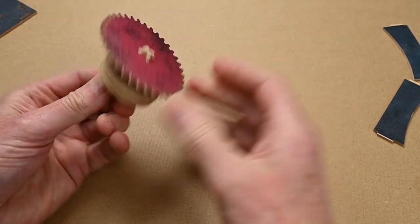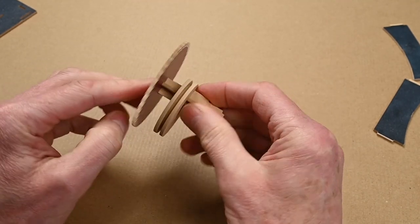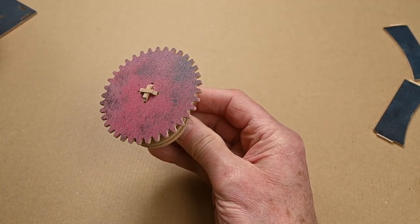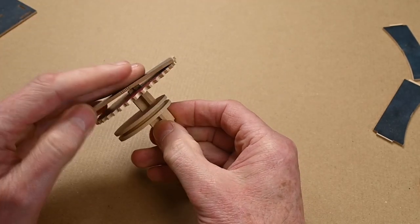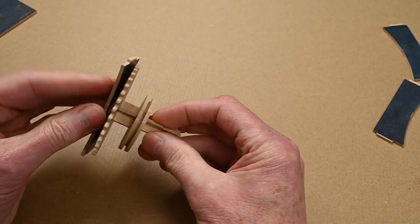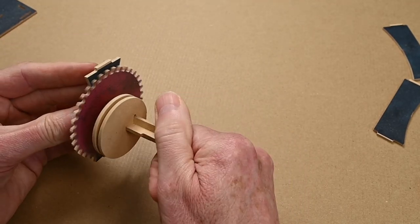That gear's going to go on there and then that piece there will fit in the sidewall like that to make a bearing.